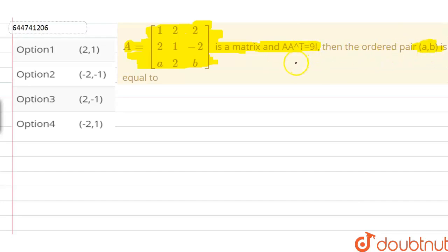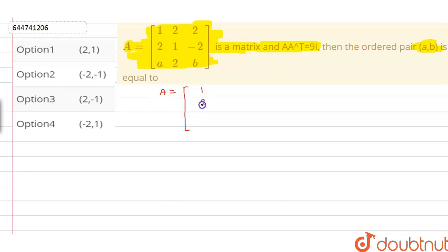So first of all, what is our approach going to be? We need to write the value of A into A transpose. We know the value of matrix A. Matrix A is equals to: first row is 1, 2, A; second row is 2, 1, 2; and the entries continue with 2, minus 2, and B.